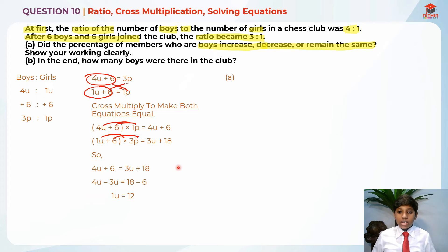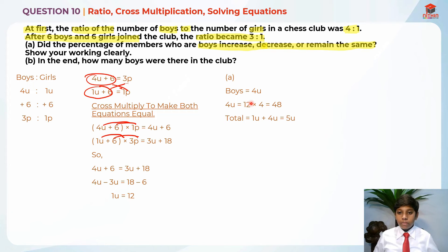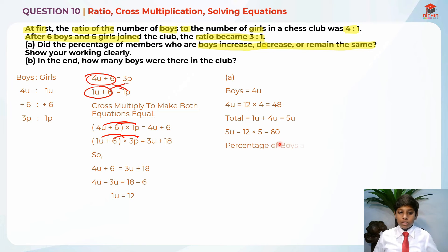For part A, they've asked whether the number of boys increased, decreased, or remained the same. So I'm going to find the number of boys at first, which is 4 units. So 4 units equals 12 times 4, which is 48. Then I find the total: 1 unit plus 4 units is 5 units, and 5 units equals 12 times 5, which is 60. So I put 48 over 60 times 100%, which gives the percentage of boys at first as 80%.